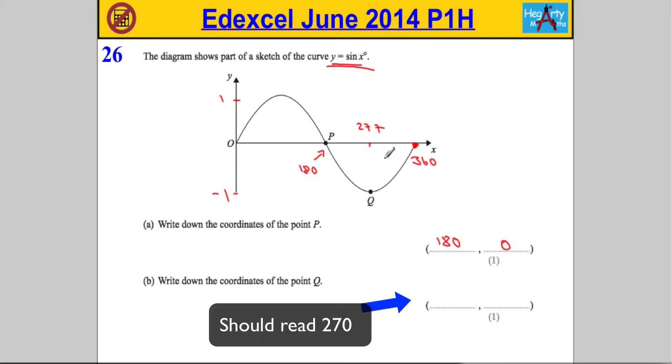And Q is going to be—I don't know why I wrote 277—it should be 270. It should be 270 is the x and the y is negative one.